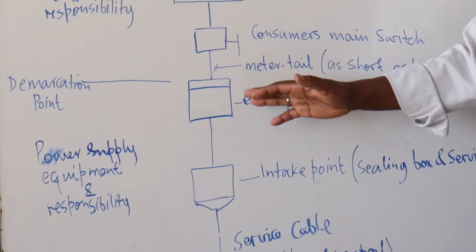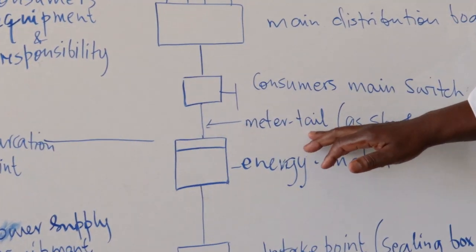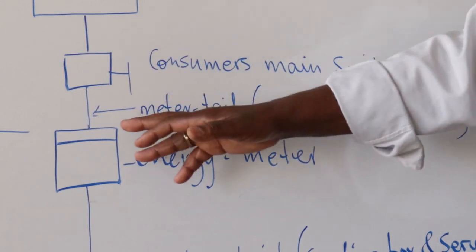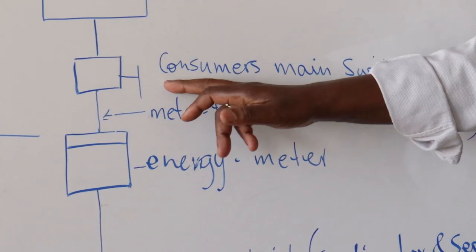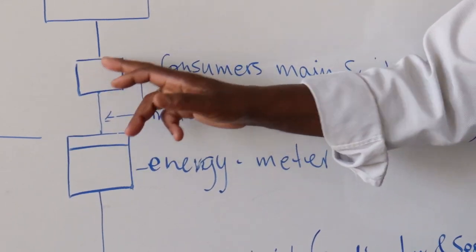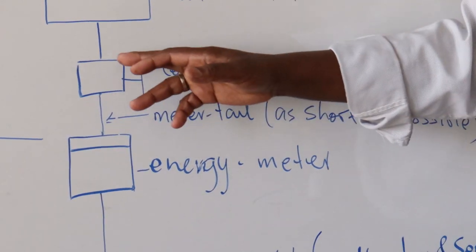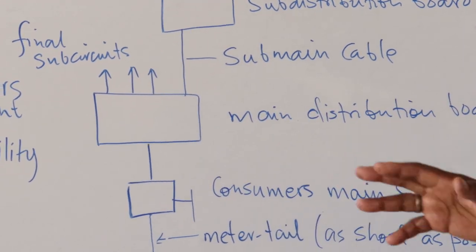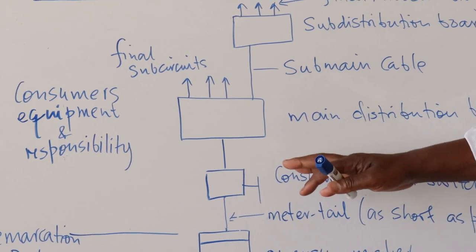From the energy meter there is what used to be referred to as the meter tail, which should be as short as possible so that nobody can interfere with it. This comes to the consumer's main switch, which is a double pole, before it goes to the main distribution board or consumer control unit.